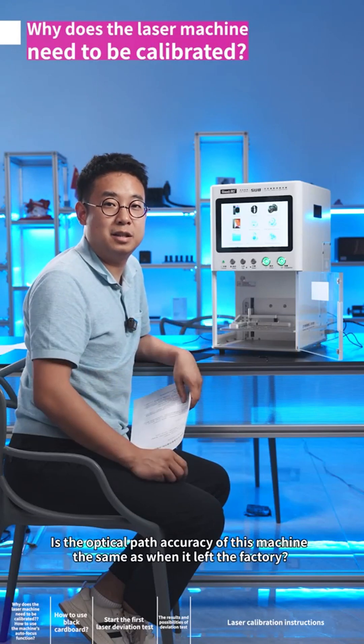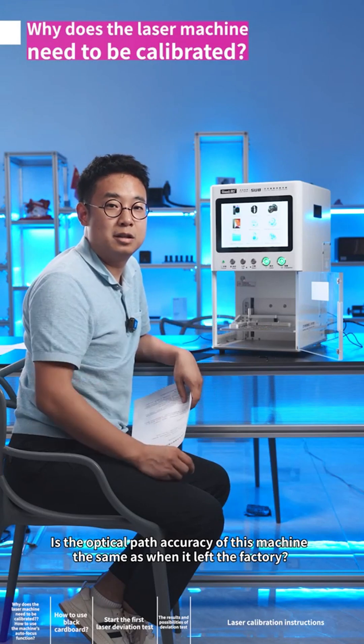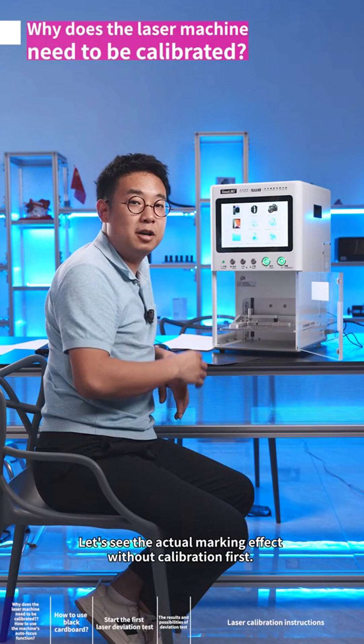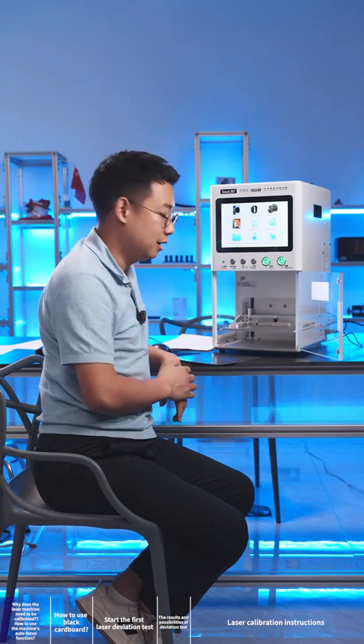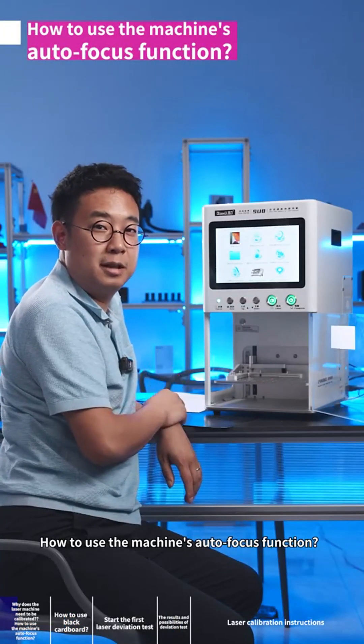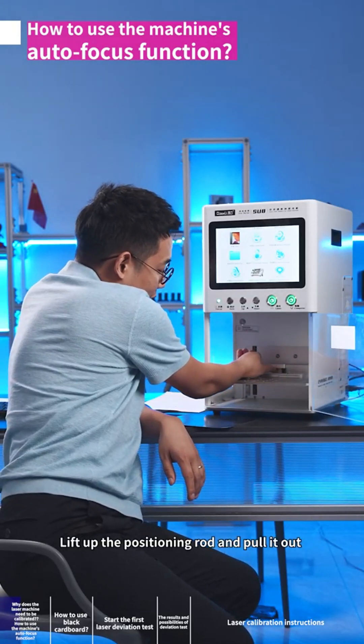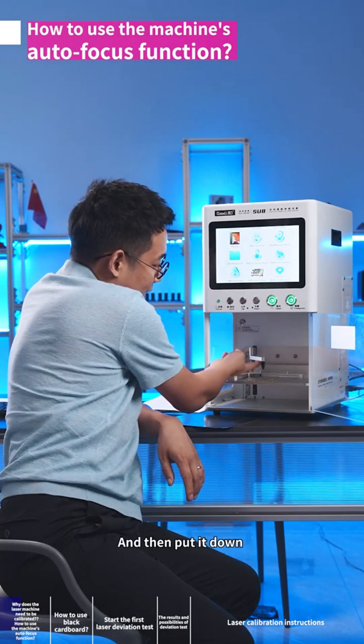Is the optical path accuracy of this machine the same as when it left the factory? Let's see the actual marking effect without calibration first. How to use the machine's autofocus function: lift up the positioning rod and pull it out, then put it down.